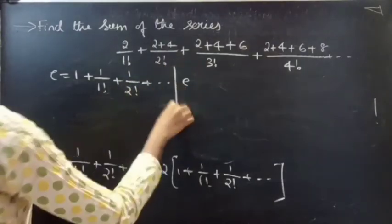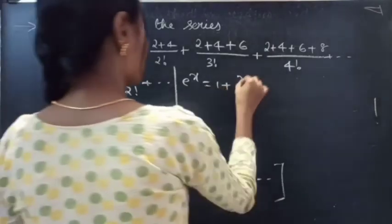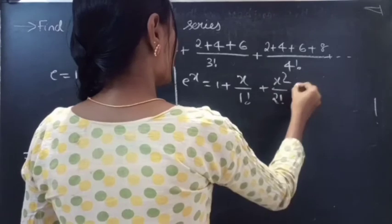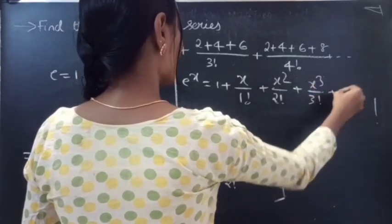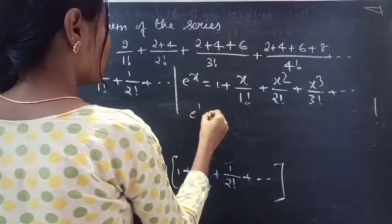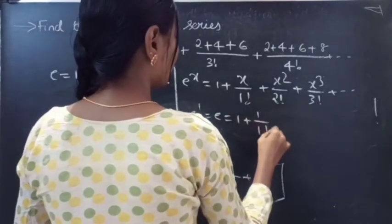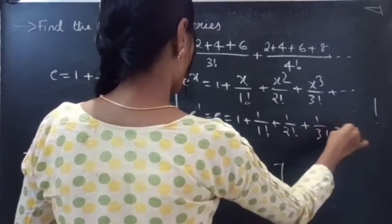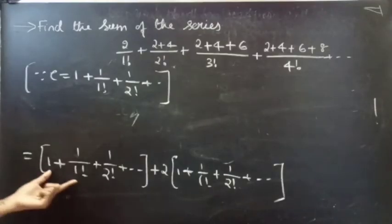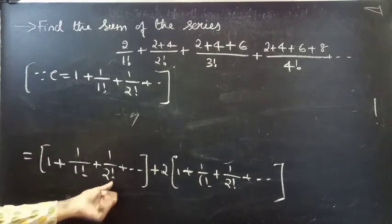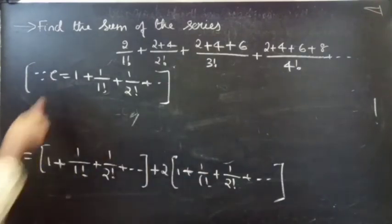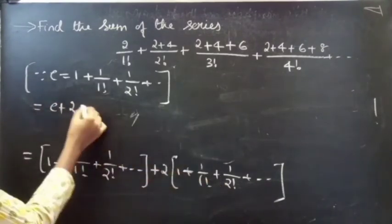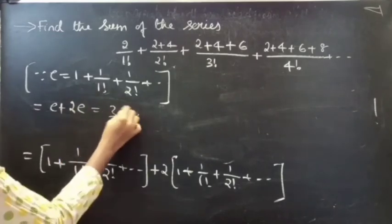We know that e^x = 1 + x/1! + x²/2! + x³/3! + so on. Putting x = 1, we get e = 1 + 1/1! + 1/2! + 1/3! + so on. So the first sum equals e and the second part is 2e. Therefore the total sum is e + 2e = 3e.